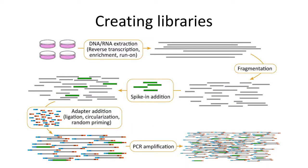Talking about creating libraries — this is a broad strokes overview of what library creation involves. Depending on your protocol or library kit, some steps might look a little different, but most library preps involve all of these steps at some point. You start with your samples where you have your DNA or RNA extraction, and then anything you do to that depending on your protocol: whether it's reverse transcription of RNA, enrichment like in ChIP-seq enriching by a protein with an antibody, or run-on sequencing for nascent RNA. After that processing, you get a set of either DNA or cDNA.